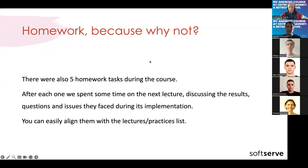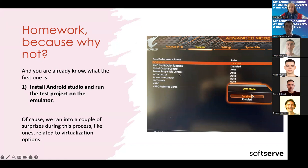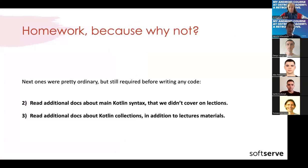The first homework was to install Android Studio and run a test project on the emulator. Of course we ran into a couple of surprises during this process, like ones related to virtualization options. I had to create photos of BIOS settings that allow you to enable the secure virtual machine options — pretty much the same for Intel processors. This screenshot is for AMD processors. The next ones were pretty ordinary but still required before writing any useful code: reading additional documentation about main Kotlin indexes we didn't cover in lectures, and reading additional documentation about Kotlin collections in addition to the lecture materials.